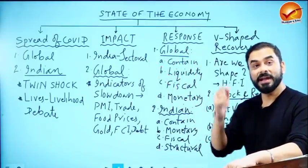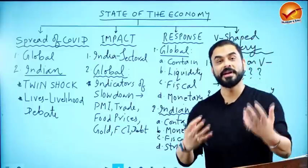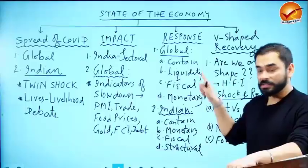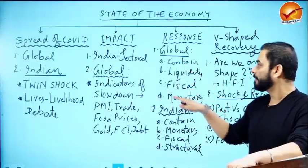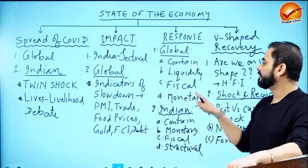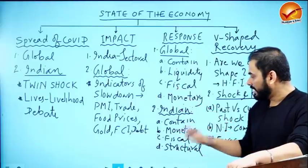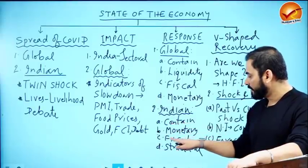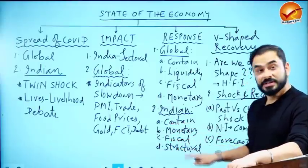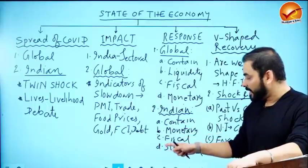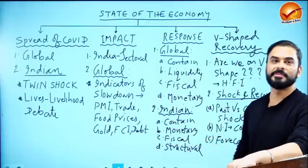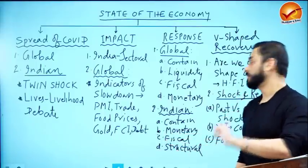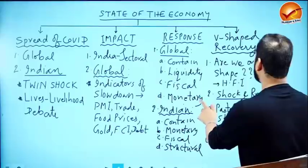Once we find the impact, we look at how India and the world responded. The global response had four components: containment, liquidity, fiscal, and monetary measures. India's response was also fourfold: containment, monetary measures, fiscal measures, and structural measures — the last three forming what is called Atmanirbhar Bharat.